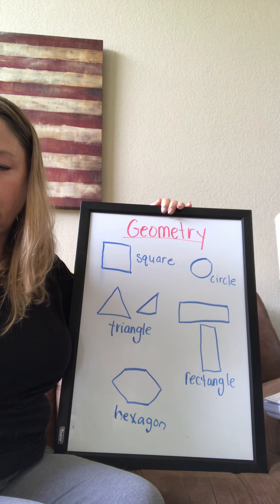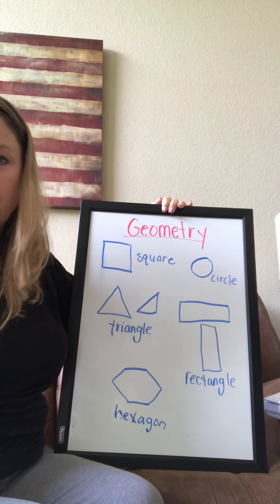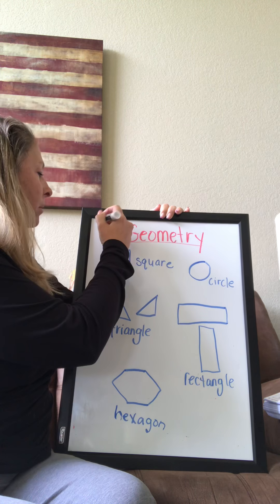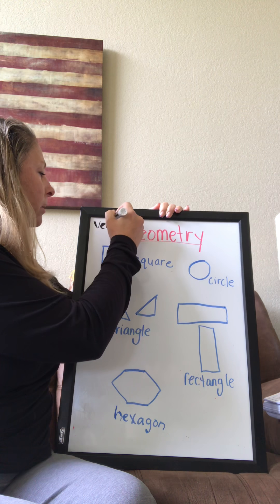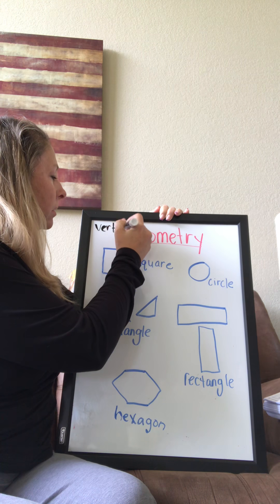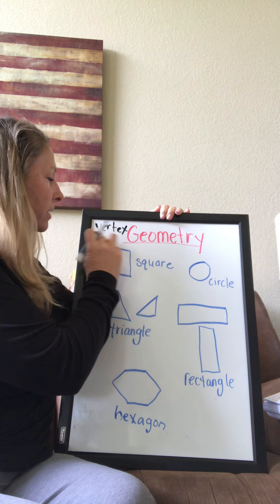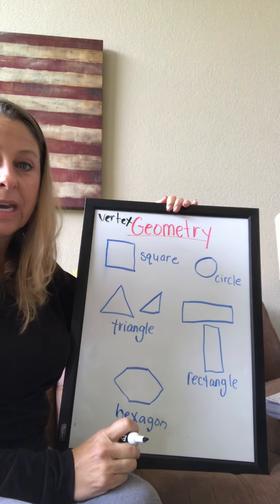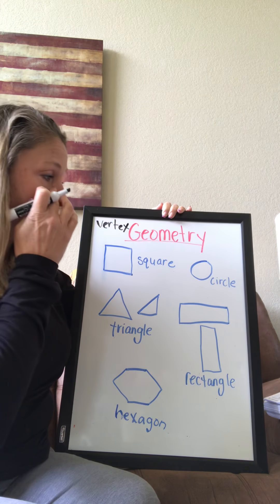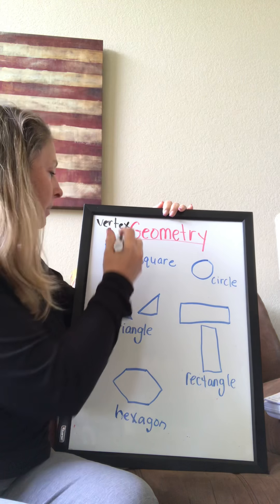Now, when we're looking at and analyzing these shapes, we're going to look at two things. We're going to look at something called a vertex — V-E-R-T-E-X, vertex. And we're also going to be looking at sides. I want to go over what these things are.